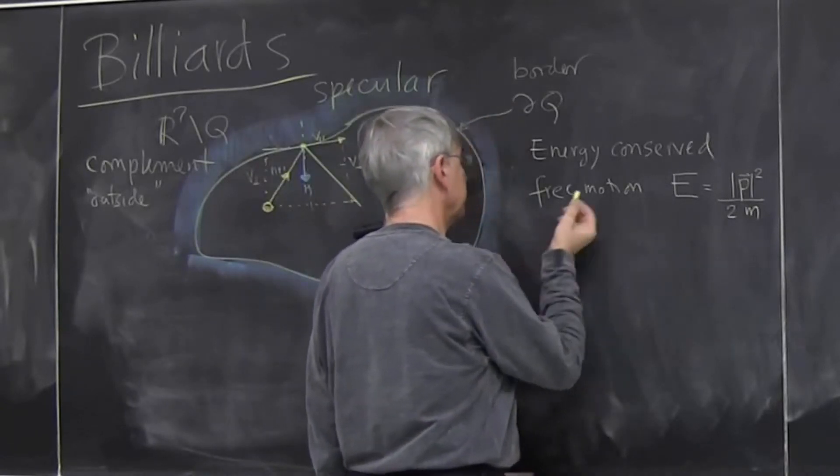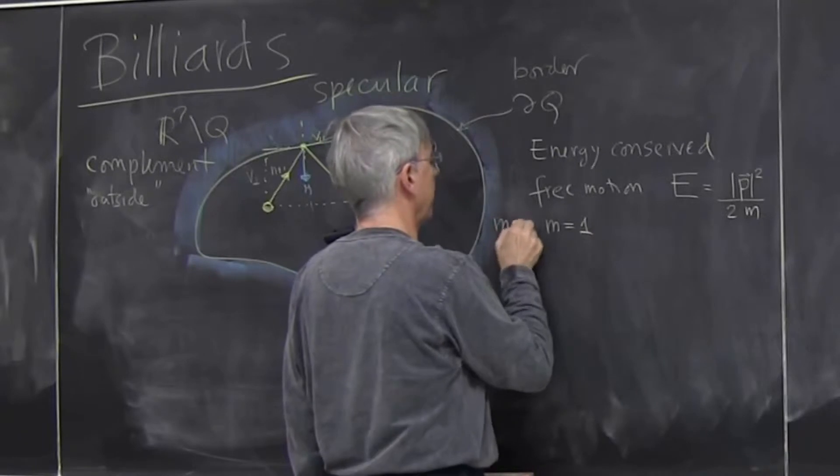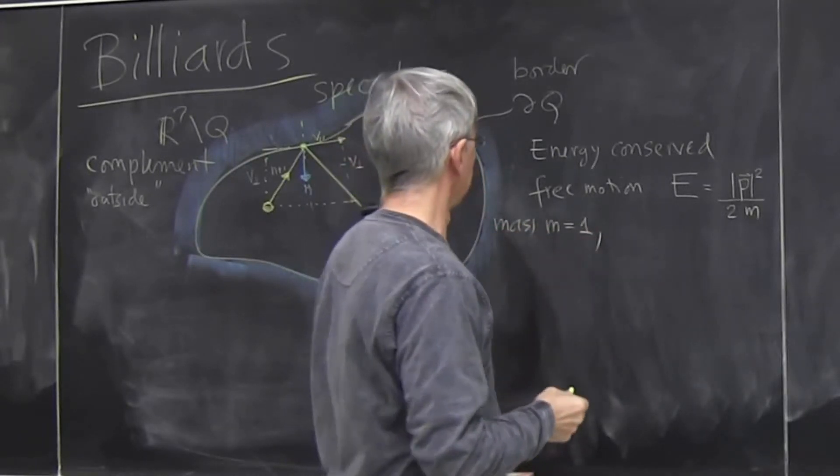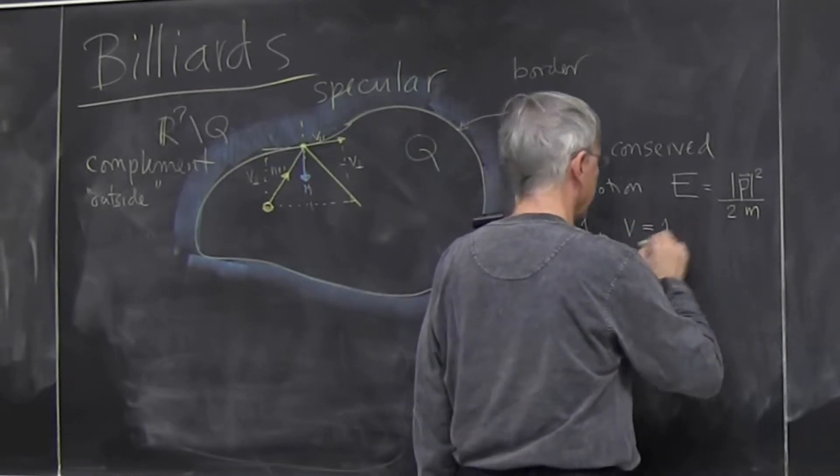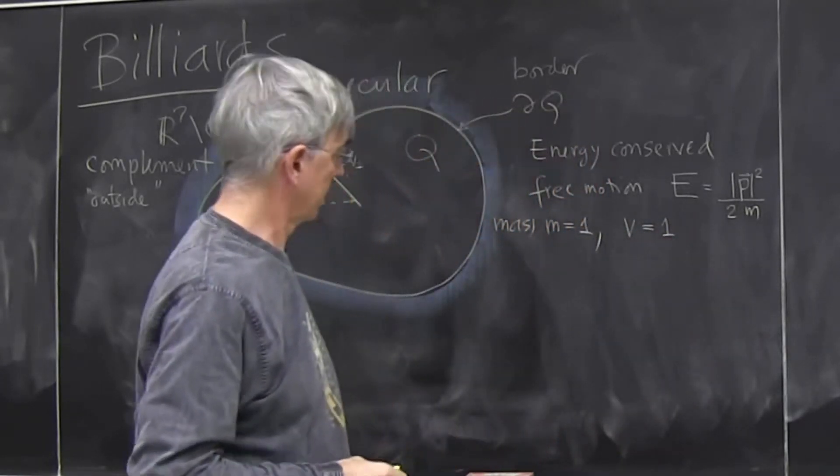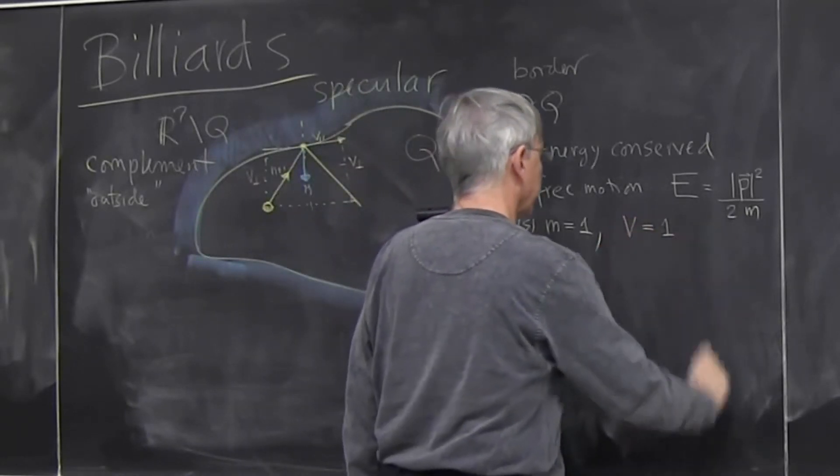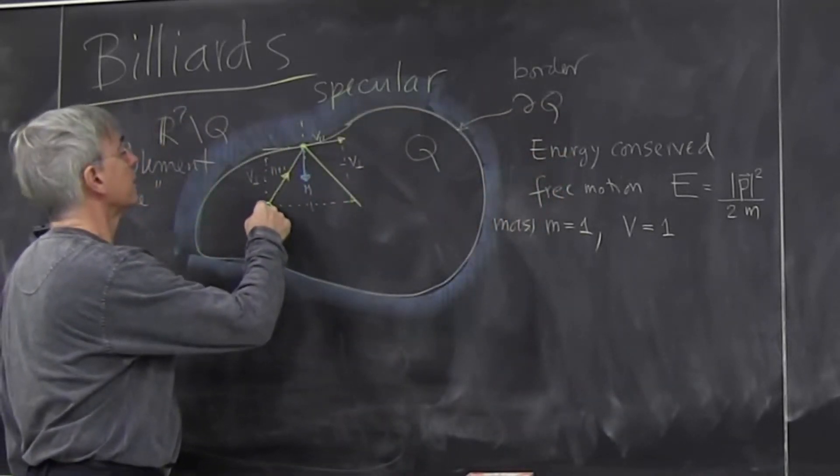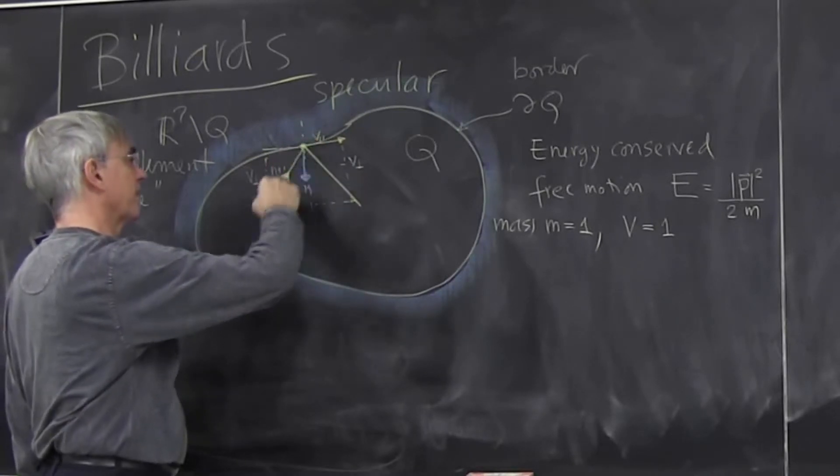This says the energy is just velocity squared, so this is momentum squared, free motion of a two-dimensional vector in a plane. Then it will be convenient to set mass equals one and to set velocity equals one because it doesn't change in time. So might as well measure lengths in units of time because velocity is the same.